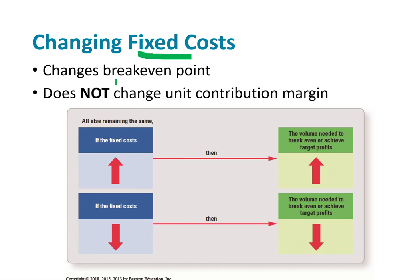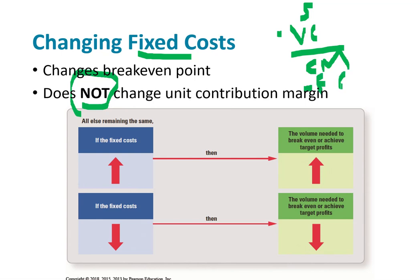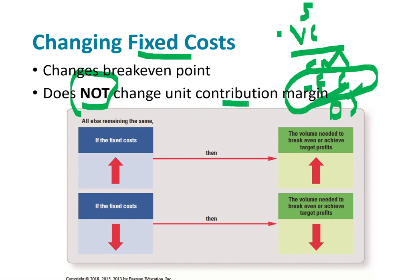When fixed costs change, the break-even point changes, but it does not change the unit contribution margin. Remember, sales minus variable costs gives your contribution margin, and then subtracting fixed costs gives operating income. Because fixed costs are below the contribution margin in the equation, they do not change the contribution margin. However, changes in fixed costs do change the volume needed to break even or achieve targeted profits: when fixed costs go up, break-even goes up; when fixed costs go down, break-even goes down.